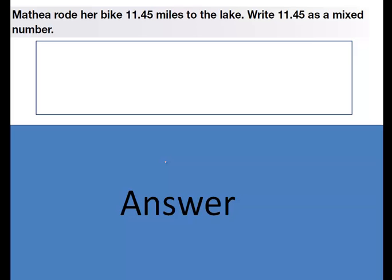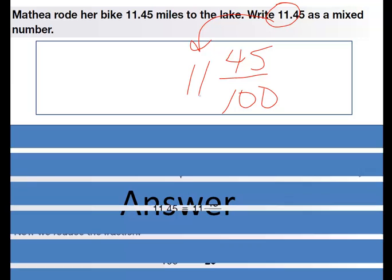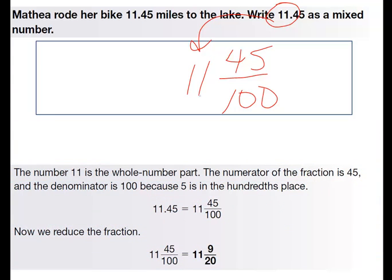Mathia rode her bike 11.45 miles to the lake. Write 11.45 as a mixed number. You know from the previous slide that you're going to write 0.45 over 100, but what do you do with the 11? Well, the 11 is a whole number. Just go ahead and put that right down there in front of it, so you'd have 11 and 45/100, which you would then reduce down to 11 and 9/20. So don't let the fact that there's a whole number in front throw you off.